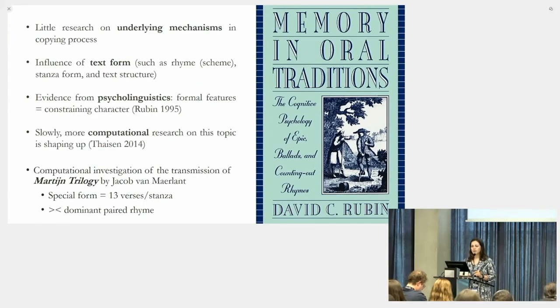But unfortunately, still little is known about the underlying mechanisms influencing this complex copying process. An aspect that I think deserves further empirical research is text form, such as the rhyme or rhyme scheme of a text, the stanza form, but also the text structure in general. Evidence from psycholinguistics, such as the research of Rubin, suggests that formal features could be labeled as constraints that prevent change. More computational research on this topic is shaping up, such as the research of Jacob Tyson.